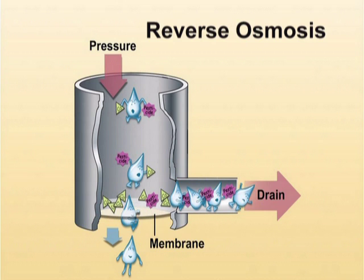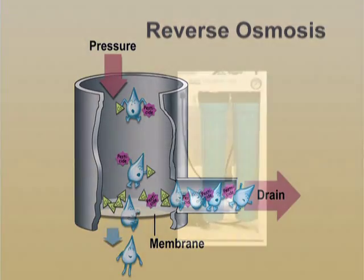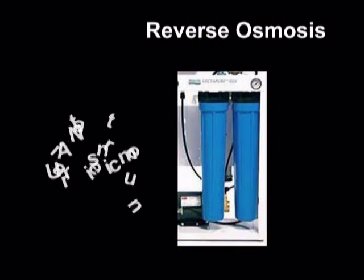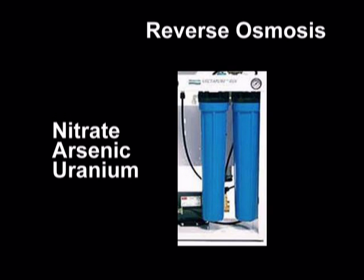Reverse osmosis units force water under pressure through a membrane, greatly reducing but not totally eliminating the concentration of some contaminants in raw water. Consider reverse osmosis to reduce concentrations of nitrate, arsenic, uranium, and some other contaminants.